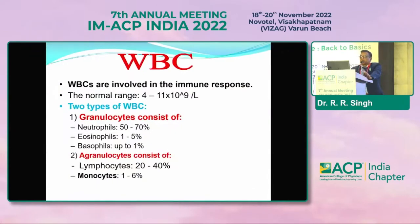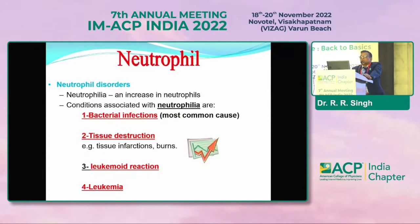Now looking at WBC: the normal range is 4,000 to 18,000 per cubic milliliter. Neutrophils are 50 to 70%, eosinophils 1 to 5%, and basophils up to 1%. When TLC count is high, we suspect several conditions: bacterial infections where TLC is very high; in acute infection, polymorphs are very high; in children and chronic infections, lymphocytes are very high.